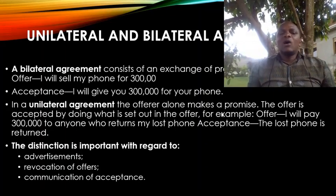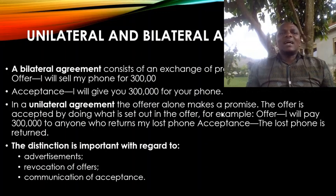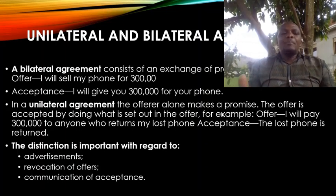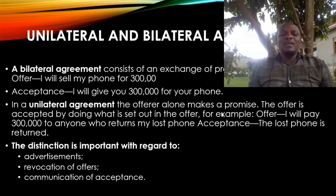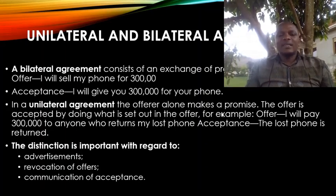In a unilateral agreement, the offeror alone makes a promise — there is no reciprocal promise by the offeree. The offer is accepted by doing what is set out in the offer. For example, if I lost my phone and I say: I will pay 300,000 to anyone who returns my phone — the acceptance is the lost phone being returned. You realize that on the part of the person returning the phone, there is no reciprocal promise; they are just performing.